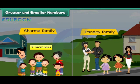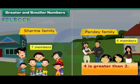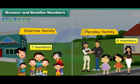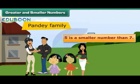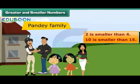Greater and smaller numbers. Recall the Sharma family with 7 and Pandey family with 5 members. Sharma family has more members, which means 7 is a greater number than 5. Numbers that come later are greater than numbers that come before — for example, 4 is greater than 2, and 15 is greater than 10. Likewise, numbers that come before are smaller than numbers that come later: 2 is smaller than 4, and 10 is smaller than 15.